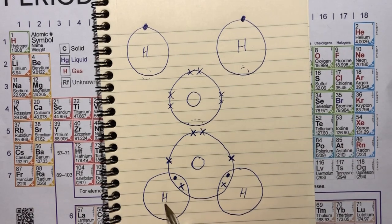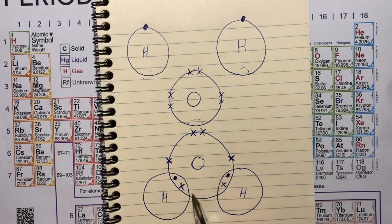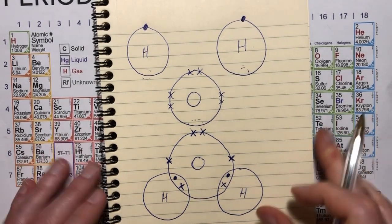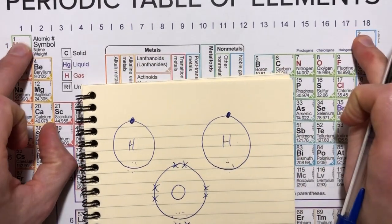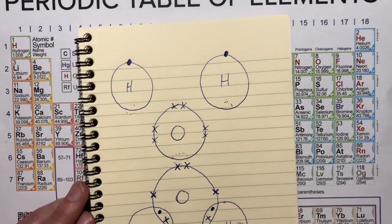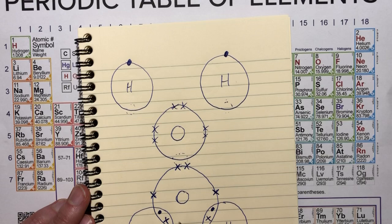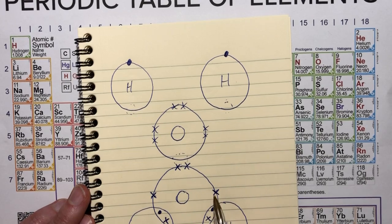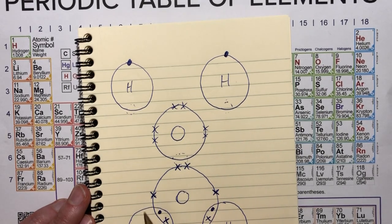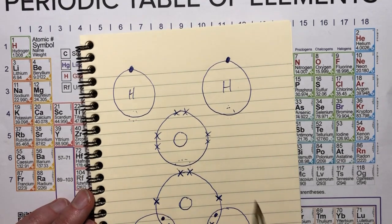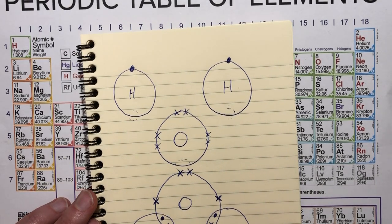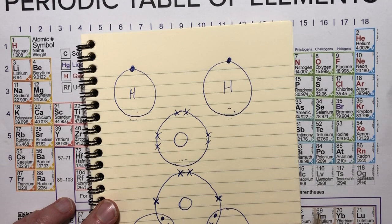And now if we count up, we can see that hydrogen has two electrons in its shell. So it's happy because it's the first shell, so it only needs two. Another two there. And oxygen has one, two, three, four, five, six, seven, eight electrons in its shell. So they all have a full outer shell, which means they are happy.